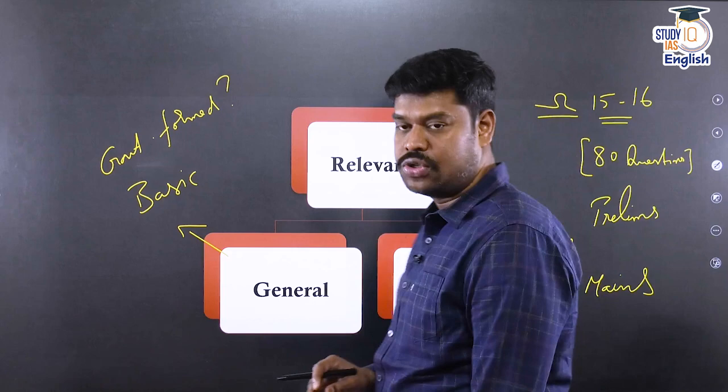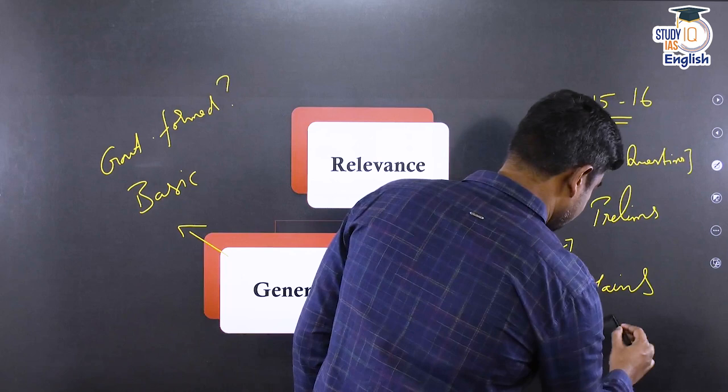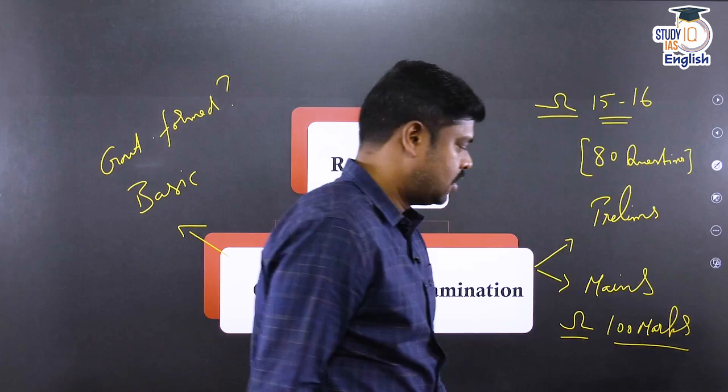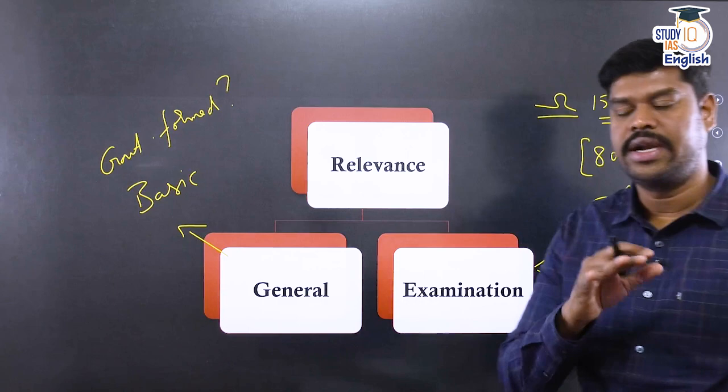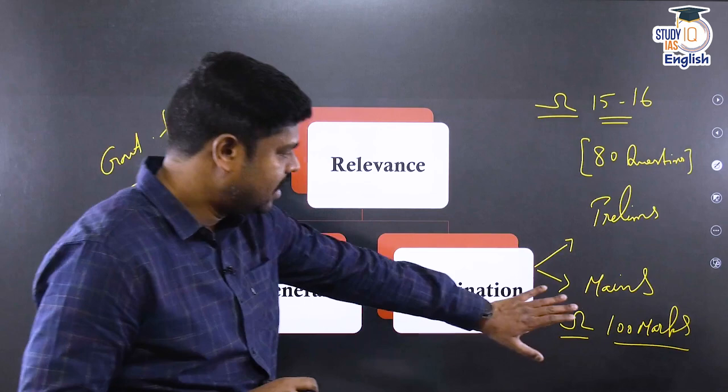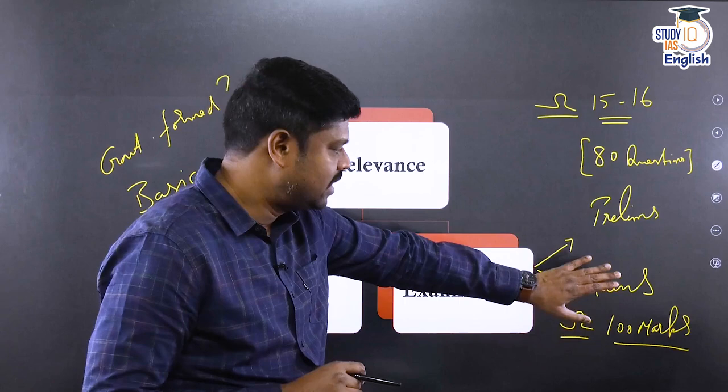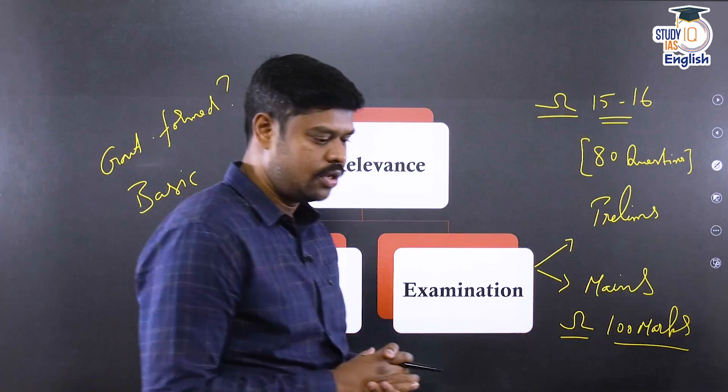And then in the mains examination also, which is part of GS Paper 2, every year approximately questions come for 100 marks. Now, this 100 marks is from core polity — I am not including the governance part, the social justice part, or the international relations part, which is also part of the civil service examination. It is only from the core Indian polity, and this is the average for the last five to ten years. So this subject is very, very important for both prelims as well as the mains examination.